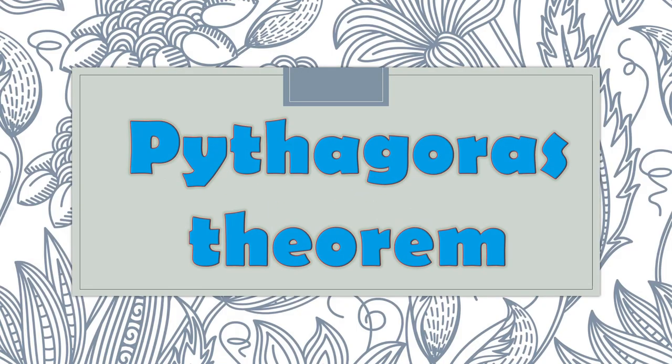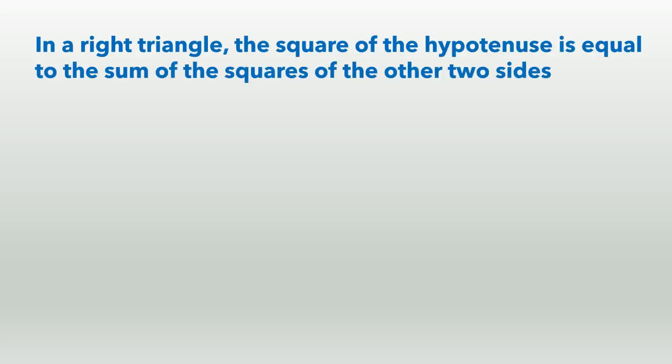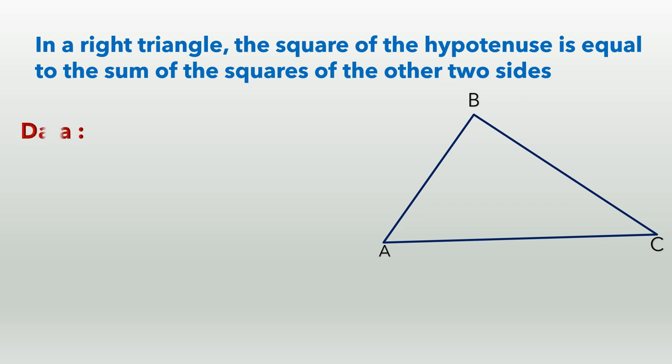Now, let us prove the Pythagoras theorem logically. Children, we know the Pythagoras theorem is applicable for a right-angled triangle. Hence, we consider right triangle ABC in which angle B is equal to 90 degrees. This is the data given to us.